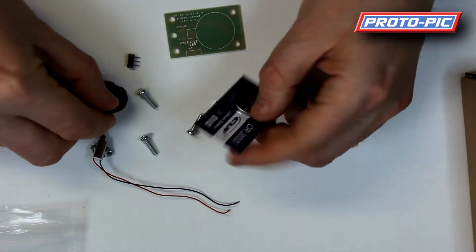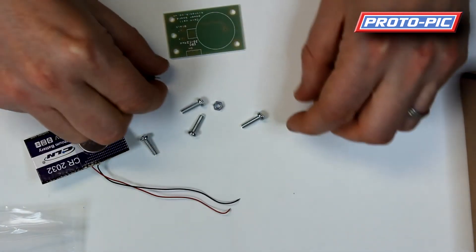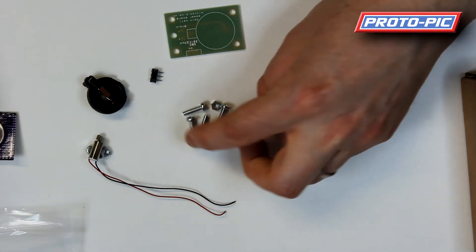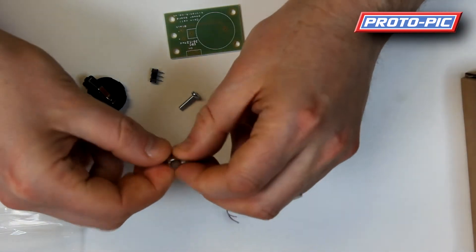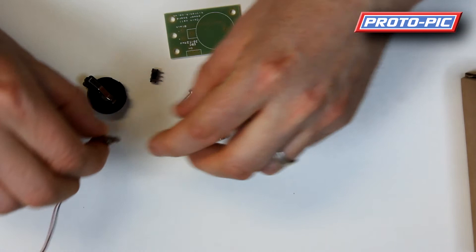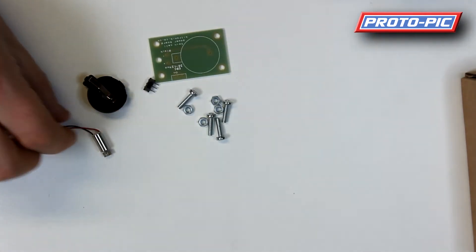A coin cell battery holder, the coin cell battery, a little slide switch and then you've got four screws and four nuts, three of which are joined onto the motor because it's slightly magnetic.